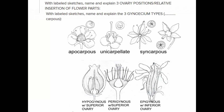We also learned about some of the ways flowers vary, particularly the relative insertion of flower parts. Looking at the bottom part of this diagram: hypogynous with a superior ovary means the sepals, petals, and stamens are separate from each other and develop below the ovary — so the ovary is said to be superior.